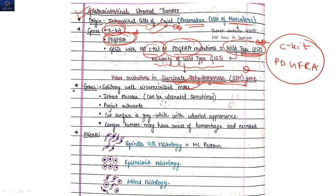On gross, you will see solitary well-circumscribed masses. Intact mucosa will be intact - there may be ulceration present but mostly intact mucosa will be seen, which is projecting outward. And when you cut the tumor, the cut surface is gray-white with whorled appearance. This is important: gray-white with whorled appearance will be seen. And there may be areas of hemorrhage and necrosis also.